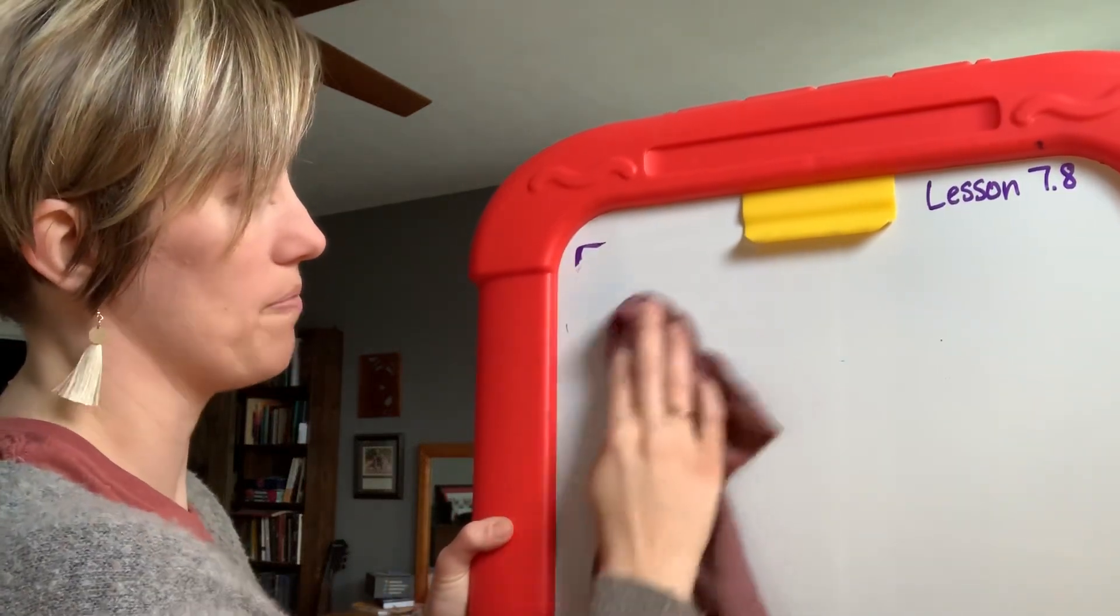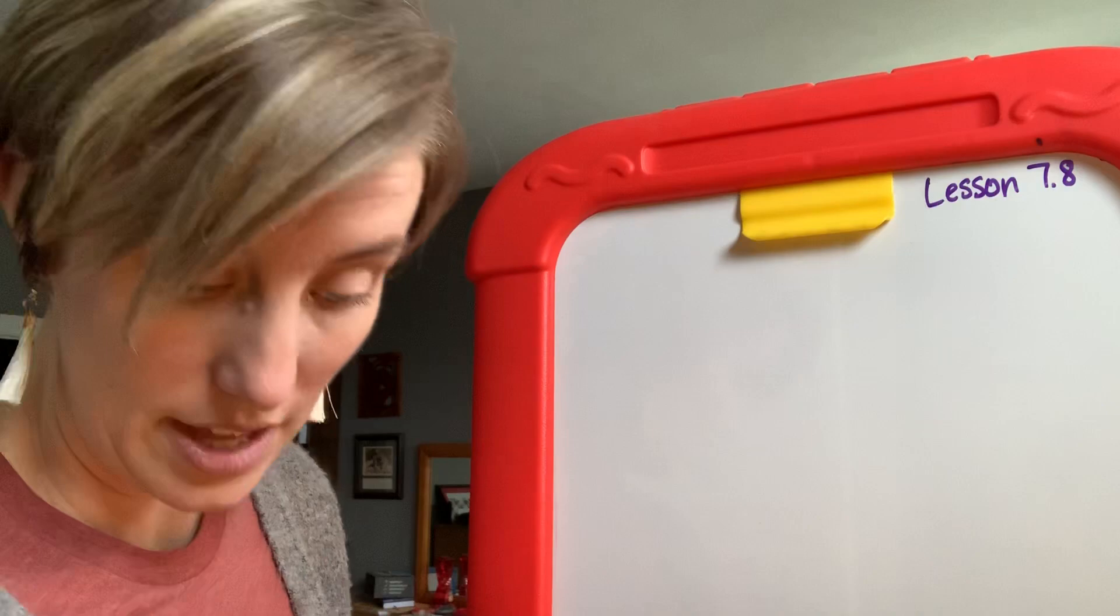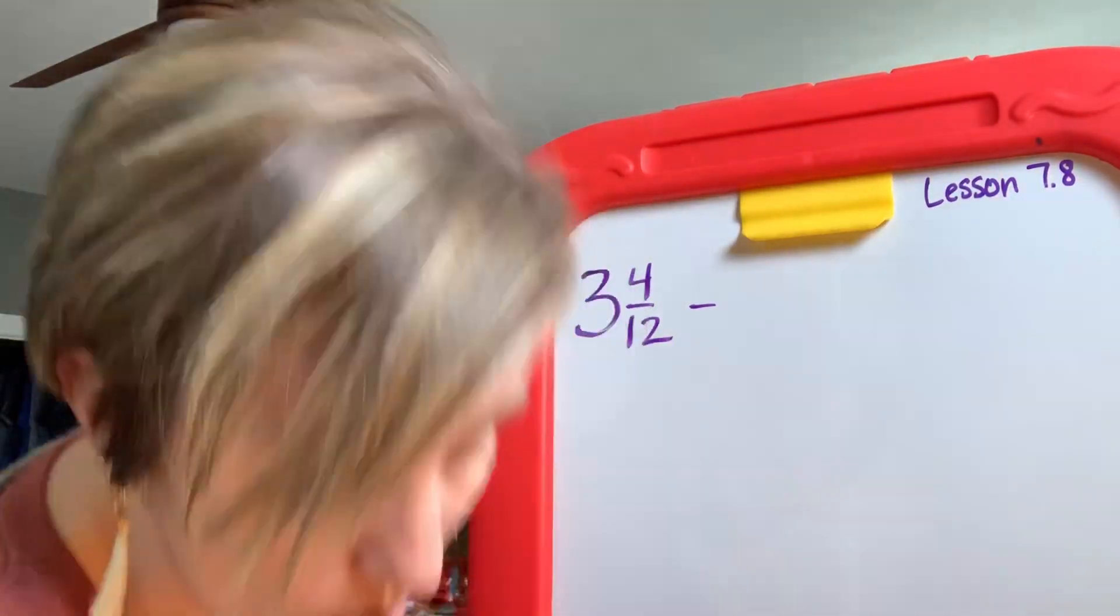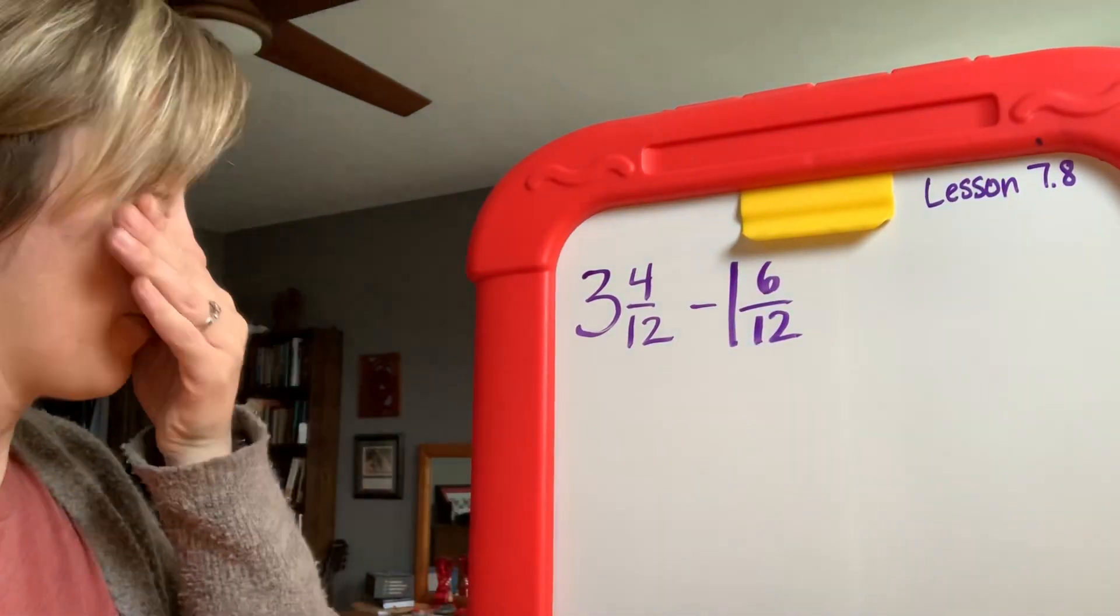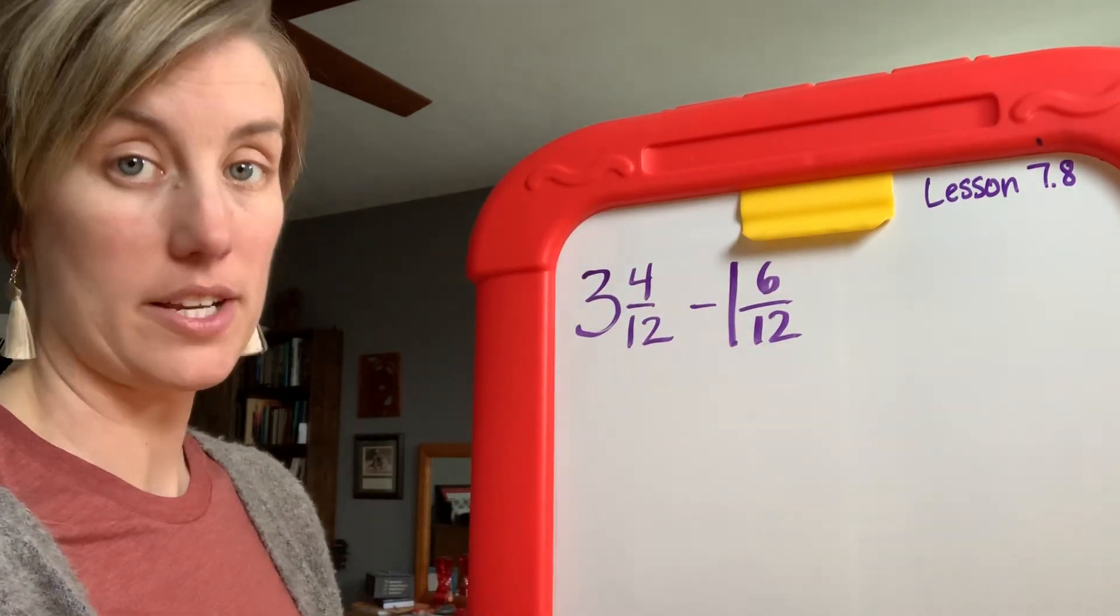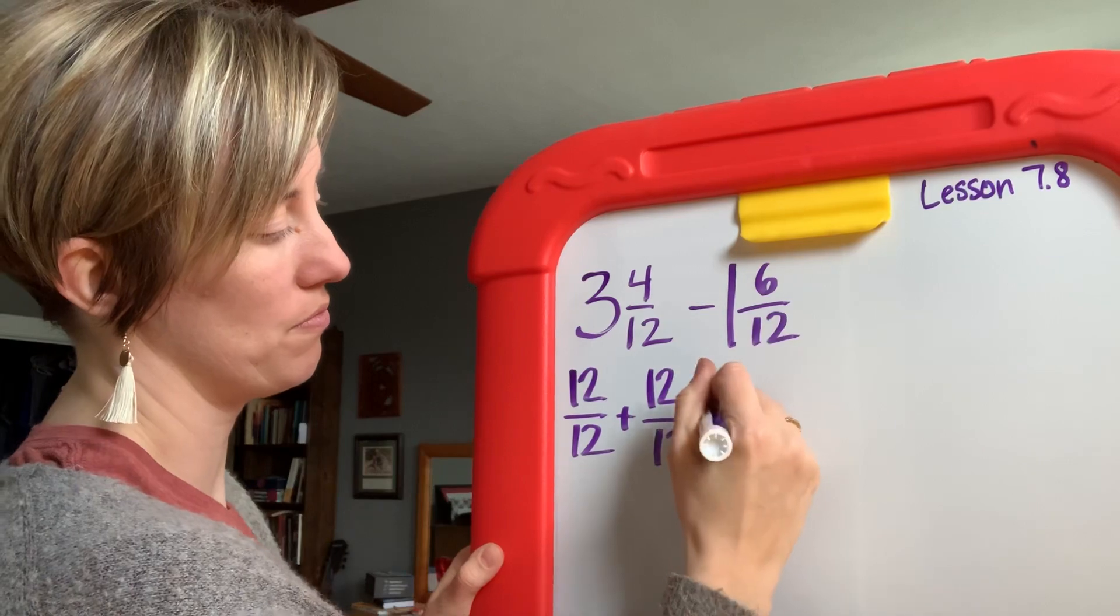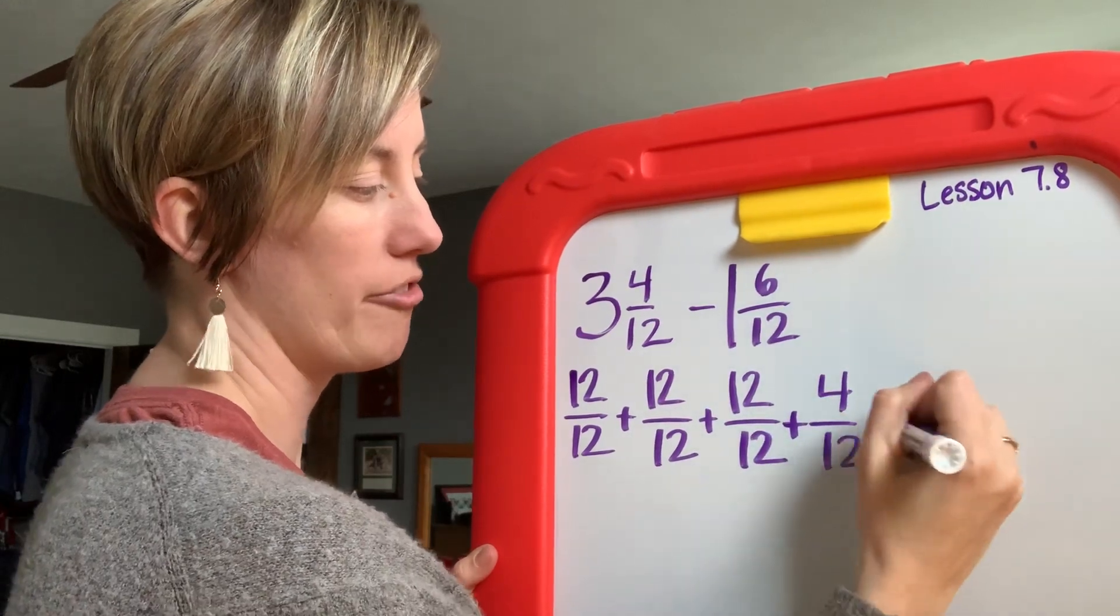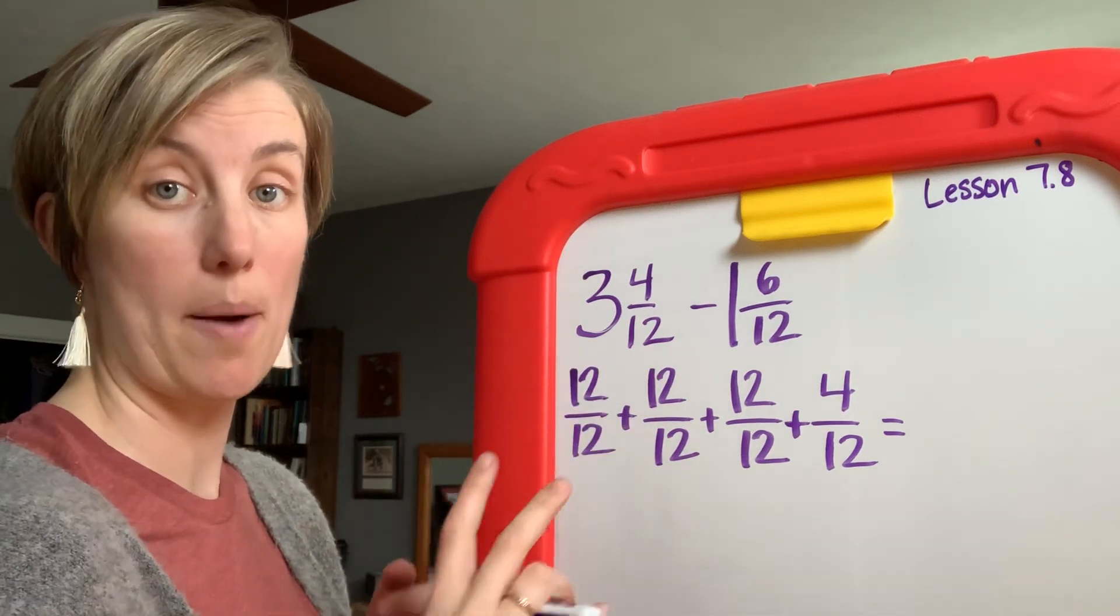Now the third strategy, the third strategy is to rename both of them. So let's take 3 and 4/12 minus 1 and 6/12. Again this is right in your workbook on page number 430. Three and 4/12 minus 1 and 6/12. Now I'm going to turn this whole number into a big old mixed fraction and I'm going to do that this way: one, two, three, not forgetting the four I had originally, four.